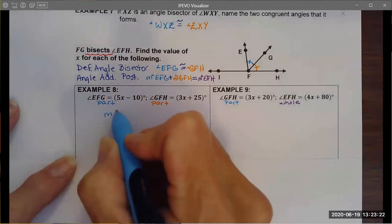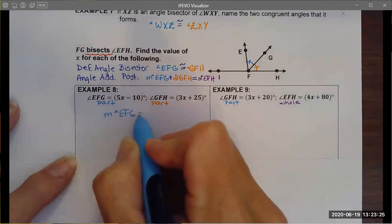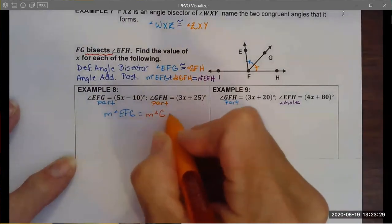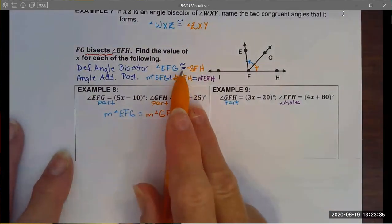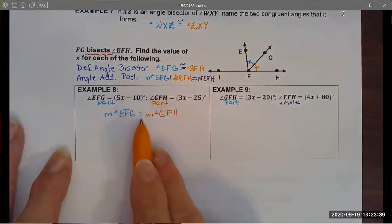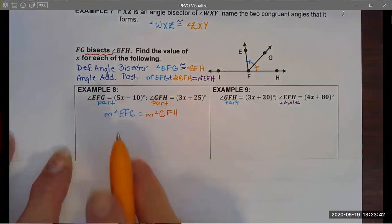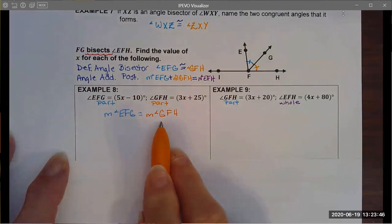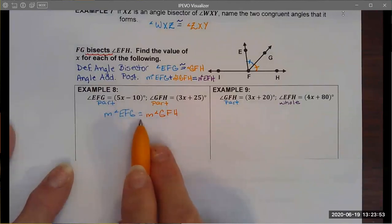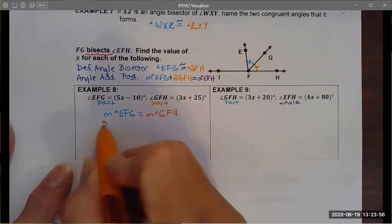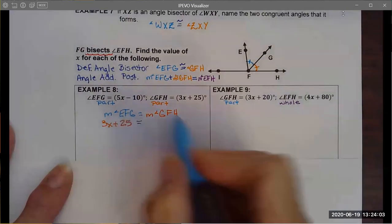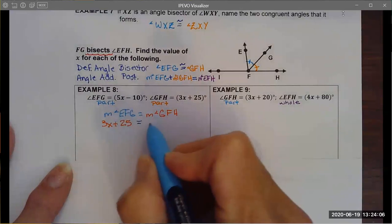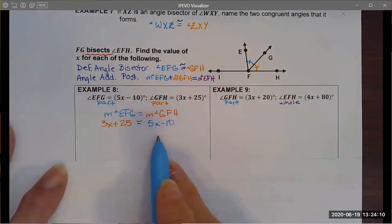I'm going to write the measure of angle EFG is equal to the measure of angle GFH. What I've done here is I went from a congruency statement given to me by the definition of an angle bisector to an equality symbol and I added measure to the front of my angle names. What allows me to do this is the definition of angle congruency. Once I have an equality symbol then I can do some algebra. I'm going to use substitution. We know that equal signs, what's on one side has to be the same as the other side.